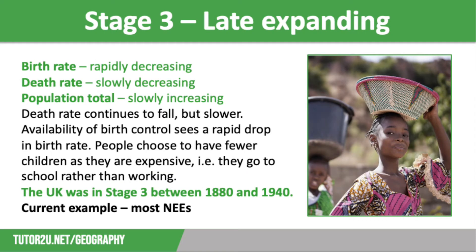Stage 3 is late expanding. Here the birth rate is rapidly decreasing and the death rate is slowly decreasing, so the population is still increasing but at a much slower rate. NEEs are mostly in Stage 3 of the DTM, along with some LICs. Compared with LICs, far fewer families in NEEs still live by subsistence means.